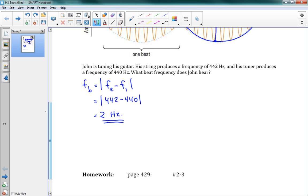And that's the answer. That means that when he's tuning his guitar, he will hear a fluctuation in loudness, going from quiet to loud, back to quiet again, at a frequency of 2 hertz. So he'll hear that fluctuation two times a second when he's tuning his guitar.